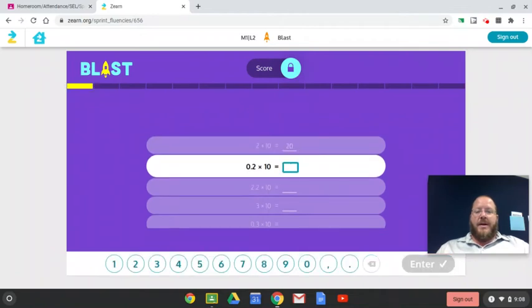20. Now look, I'm multiplying, so the number needs to get bigger. That means my decimal point has to go one place to the right. That's 2.